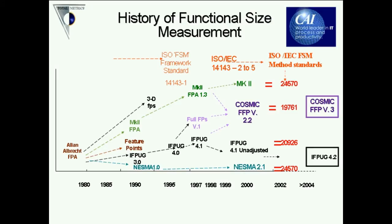First, let's look at the history. It looks rather convoluted at first, but all of the methods we're currently looking at started with Allan Albrecht back in the late 1970s, when he first realised that the size of software was not lines of code, but from a user perspective, the size of a piece of software was the amount of functionality that software delivered to the user. From Albrecht's initial work, a number of different methods were formed.